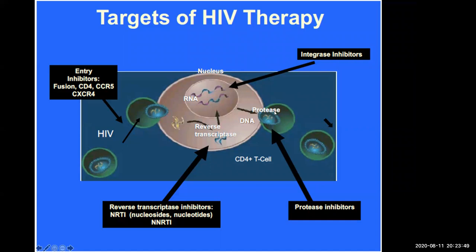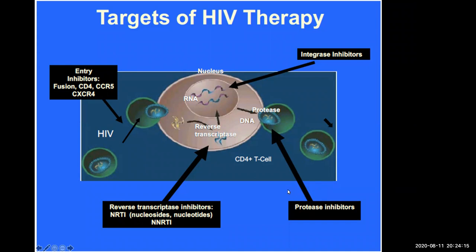Then you've got protease, which cuts the long strands of proteins and allows the virus to mature into baby viruses that are able to infect more cells. The process of cutting and maturation is facilitated by an enzyme called protease. So you've got drugs called protease inhibitors, and the main one is lopinavir and ritonavir.